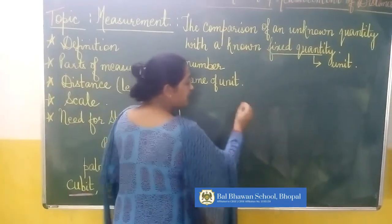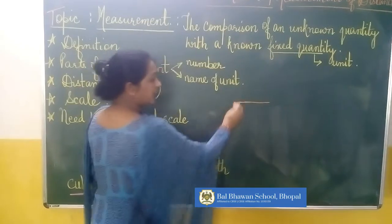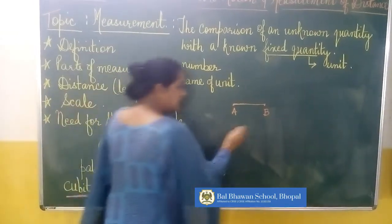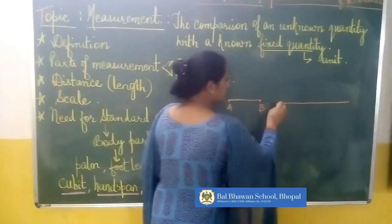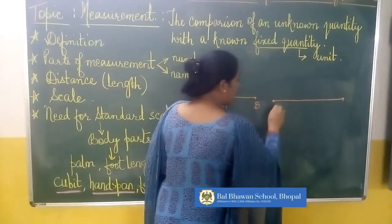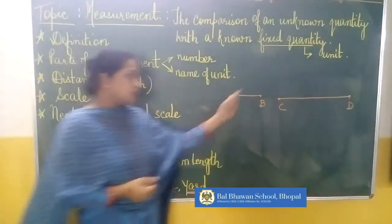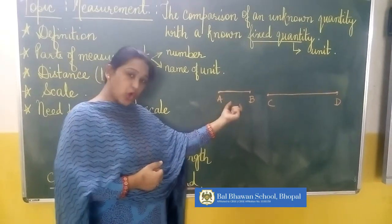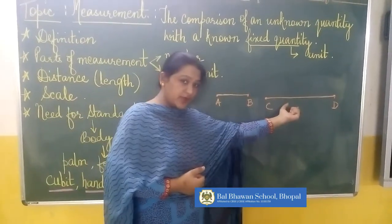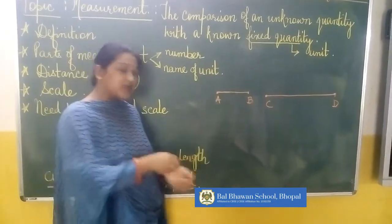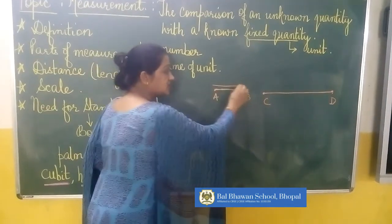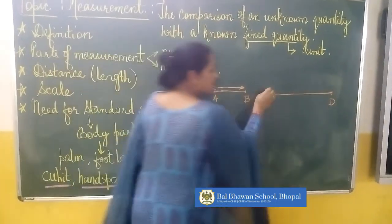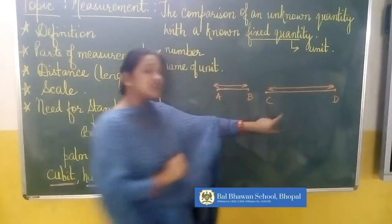Suppose I have one line segment A and B, and I have another line segment C and D. Just by looking at these two line segments, you can easily tell which one is short and which one is longer. But can you tell me exactly what is the length of this line segment? No — we cannot tell exactly what is the length.